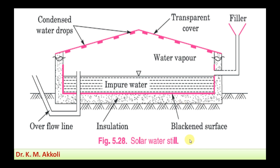This is a solar water still. It consists of a basin which is lined with a black color — a blackened surface — and the impure water is present in the basin. It is enclosed by an airtight transparent cover in the form of a roof, sloped towards the outwards. When solar radiation transfers through this transparent cover, it reaches the blackened surface, gets absorbed, and is converted into heat. That heat is enough to convert the water into vapor.